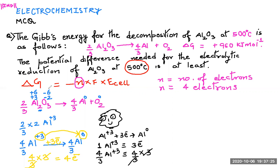Yet another way: the oxidation state goes from +6 to 0. Taking 2/3 of that change of 6 gives 2/3 × 6 = 4 electrons. So all three methods confirm n = 4 electrons.